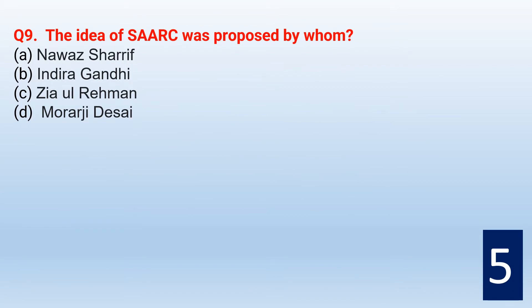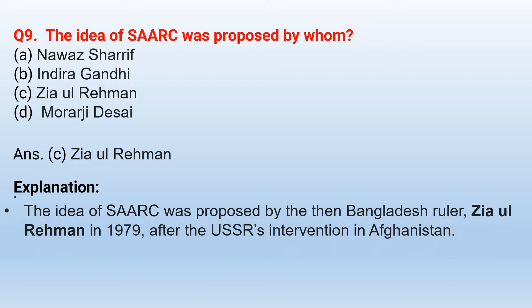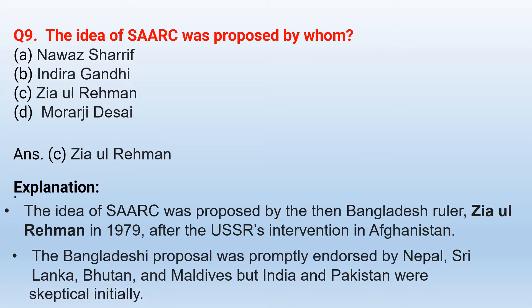The idea of SAARC was proposed by whom? The correct option is Ziaur Rahman. The idea of SAARC was proposed by the then Bangladesh ruler Ziaur Rahman in 1979, after the USSR's intervention in Afghanistan. The Bangladeshi proposal was promptly endorsed by Nepal, Sri Lanka, Bhutan and Maldives, but India and Pakistan were skeptical initially.